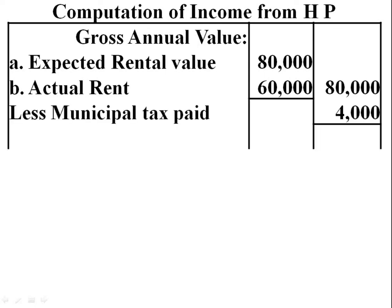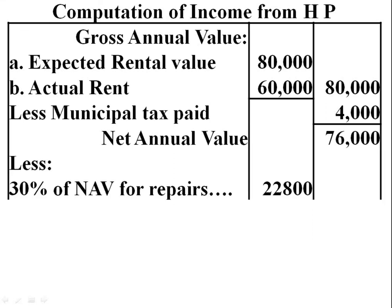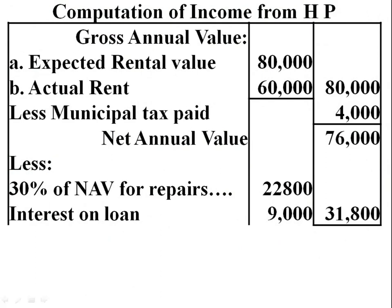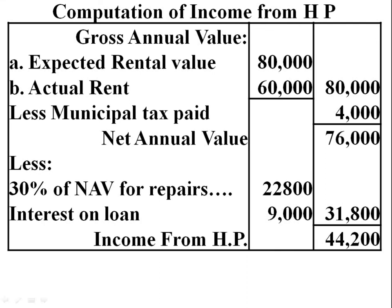From gross annual value, deduct municipal tax paid Rs. 4,000. We get net annual value Rs. 76,000. From net annual value, there are various deductions under Section 24. First, 30% of net annual value for repairs and collection charges: 76,000 × 30% = Rs. 22,800. Next, interest on loan — Rs. 9,000. Total deductions: 22,800 + 9,000 = Rs. 31,800. Deducting this, we get income from house property Rs. 44,200.